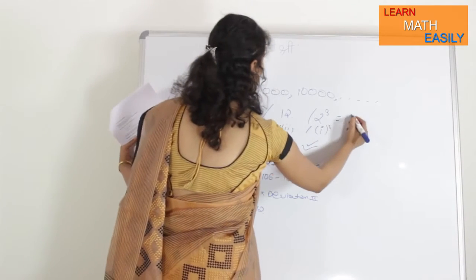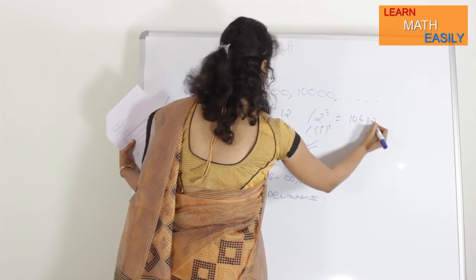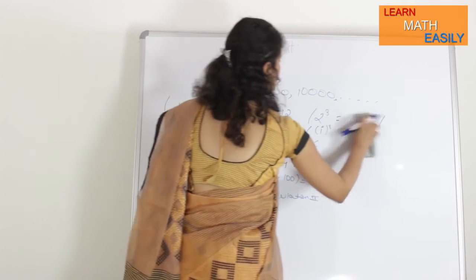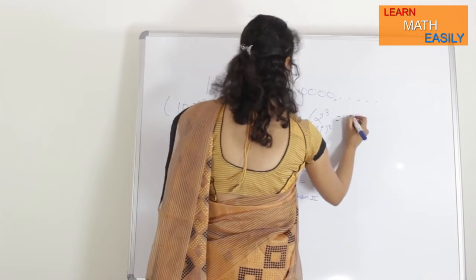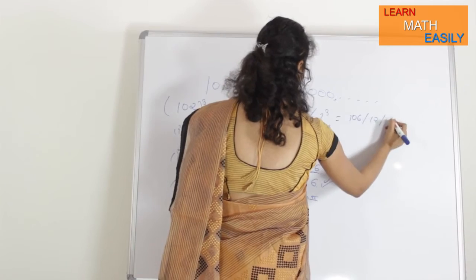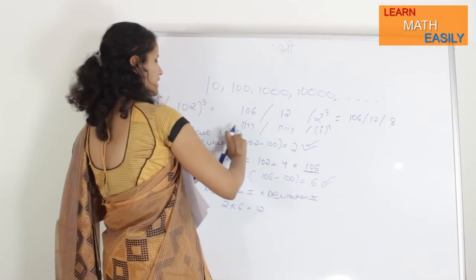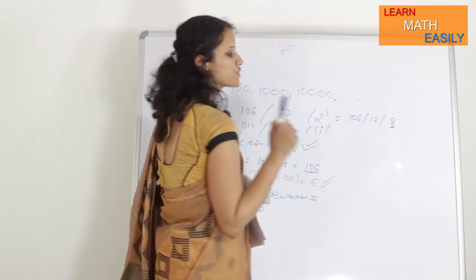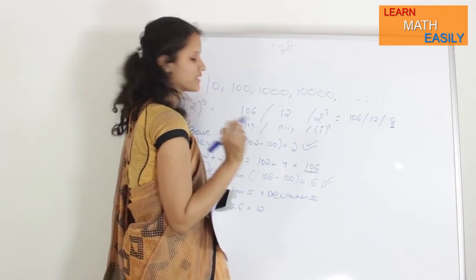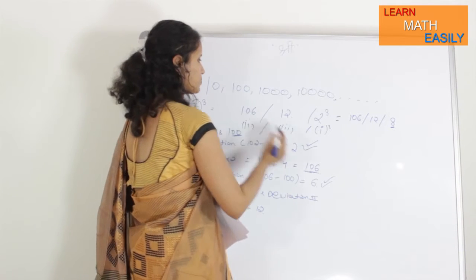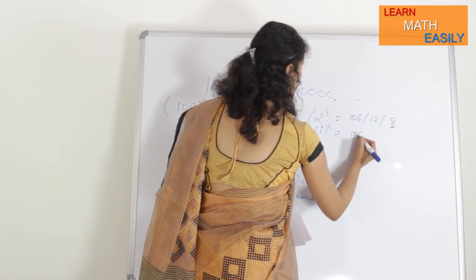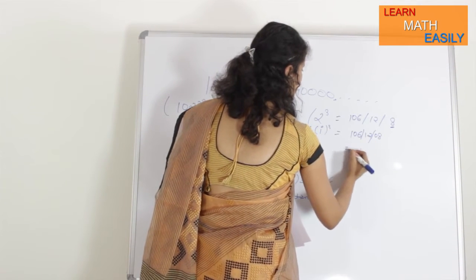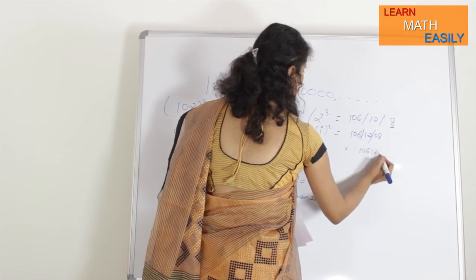My answer is, 106, 1, 2, and my answer is 106, 1, 2, 8. Since its base is 100, so this should contain at least 2 digits. This should contain 2 digits, because here zeros are 2. So, what I am going to do is, I will write 106, 1, 2, 0, 8. That is, 1,062,008 is my final answer.